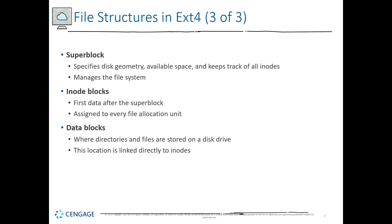We have our inode blocks — this is the first data after the super block and is assigned to every file allocation unit. This is how we can do data file analysis and find data files, because the inode block is assigned to every file allocation unit. Next is our data block, which is where directories and files are actually stored on disk. This location is linked directly to the inodes.